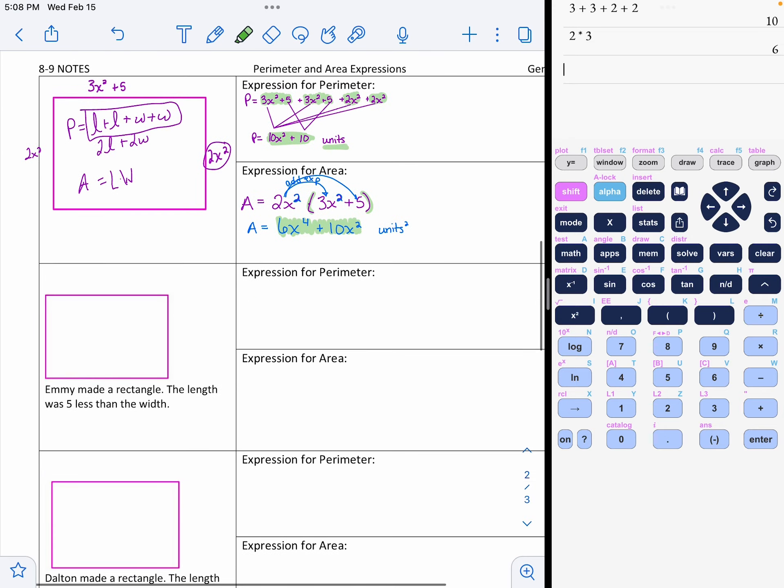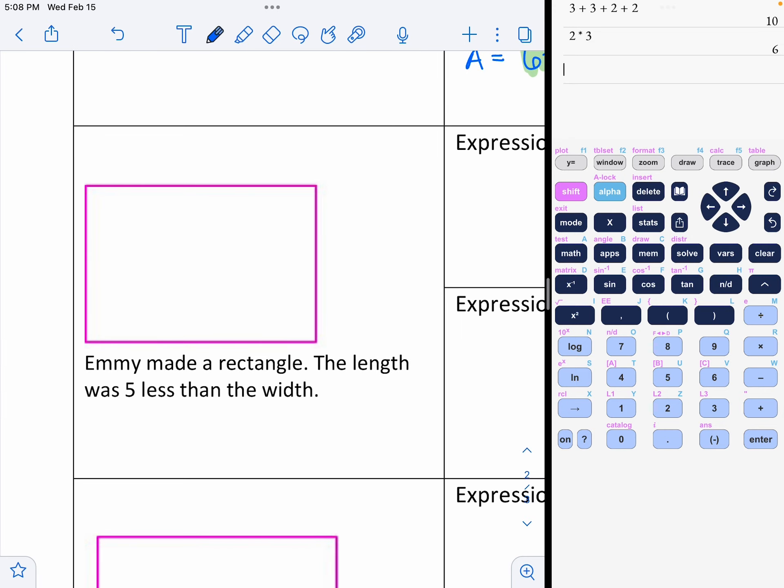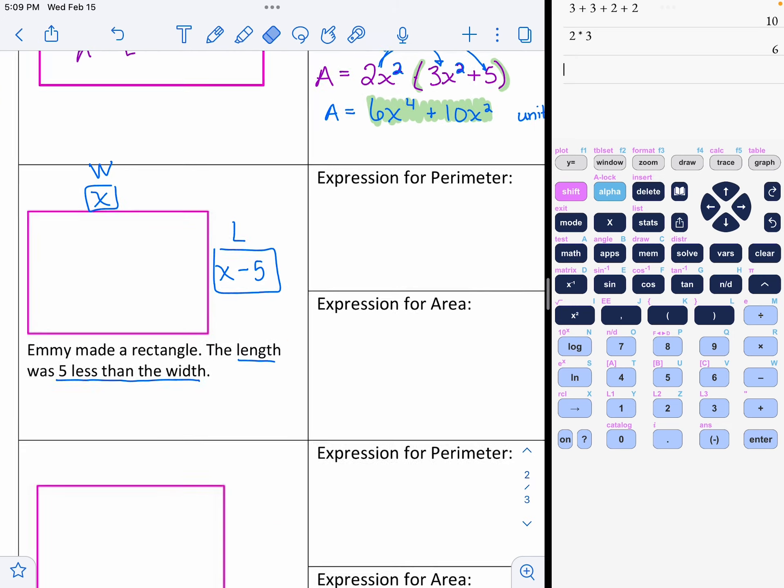Let's try that again. But this time, because you know I love them, we got to make our word problem into a math problem. Emmy made a rectangle. The length was 5 less than the width. Let's take a look at this. So the width, I don't know the width, so I'm just going to put x. So how do we do 5 less than the width? Well, you would take your width and you would take away 5. So the length is 5 less than whatever we put up here for the width.